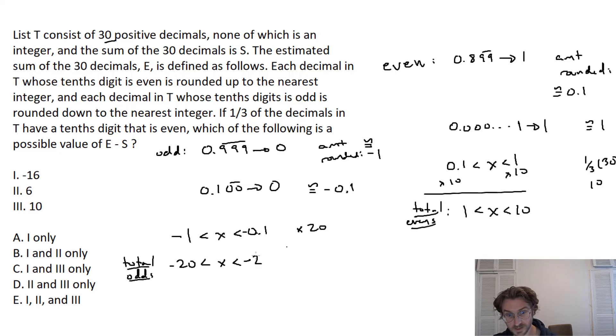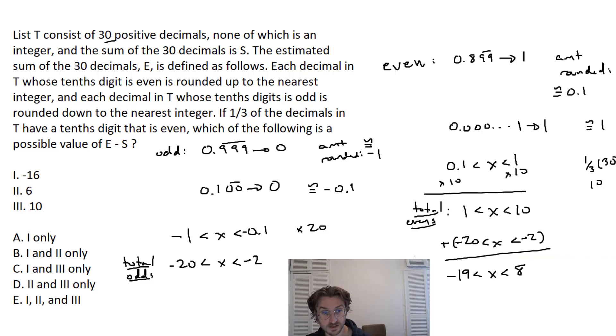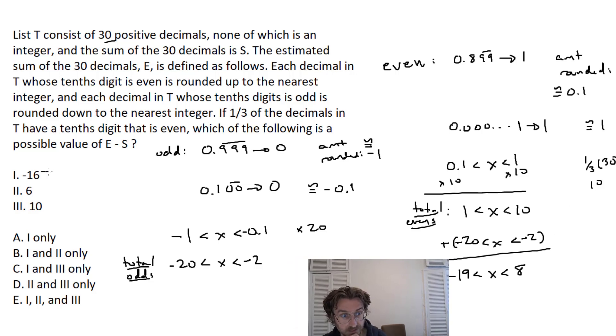So what you're looking for here is the total for the evens plus the total for the odds. So I literally just add them, put the brackets there because I'm adding a negative. And that leaves our range as minus 19 to 8. So which of these numbers over here fit within that range? That's going to be minus 16 and 6, but not the 10 because that's obviously more than 8.